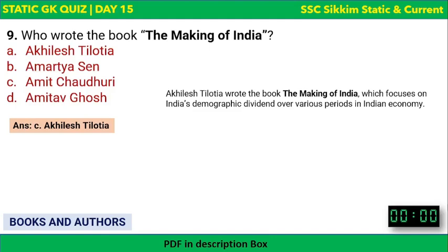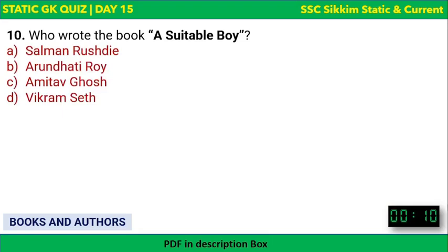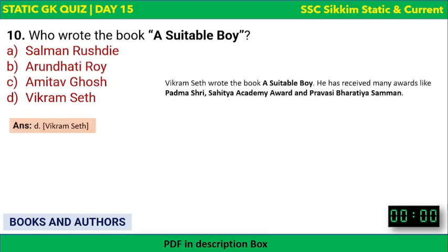Who wrote the book 'A Suitable Boy'? The options are Salman Rushdie, Arundhati Roy, Amitav Ghosh, or Vikram Seth. The correct answer is Vikram Seth. He has received many awards including the Padma Shri, Sahitya Akademi Award, and Pravasi Bharatiya Samman. He is a notable and celebrated author.